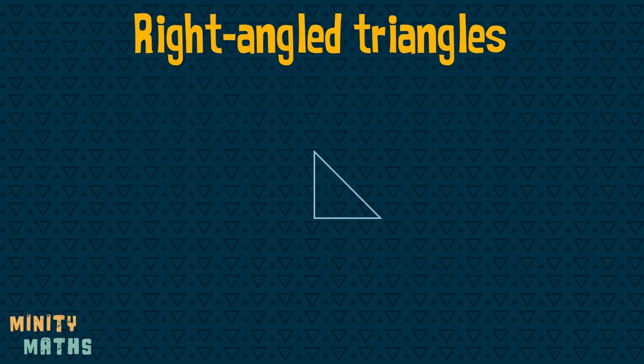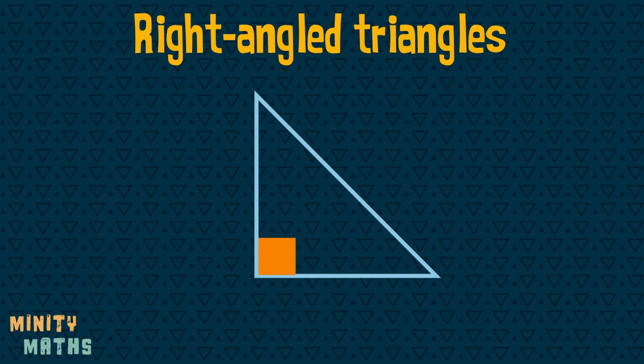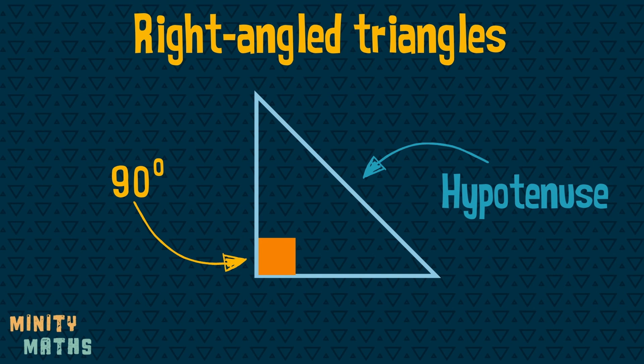Right-angled triangles have an angle of 90 degrees. The side opposite the right angle is the hypotenuse. This is the longest side.